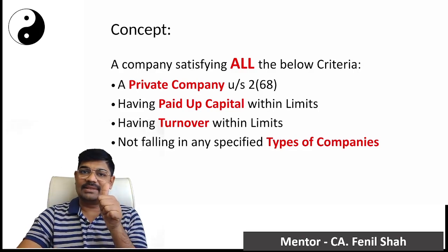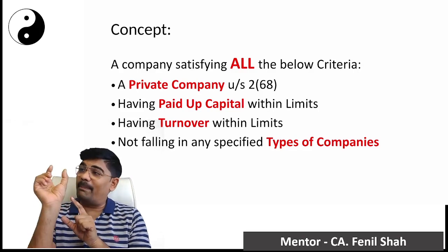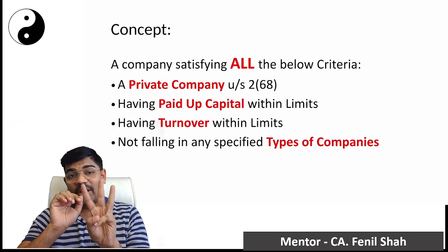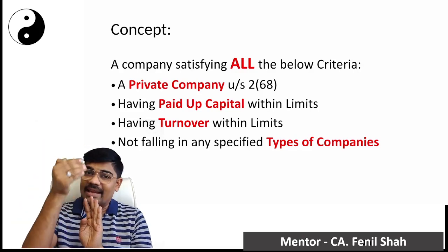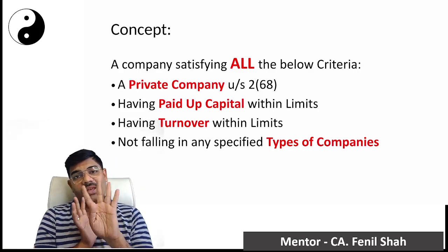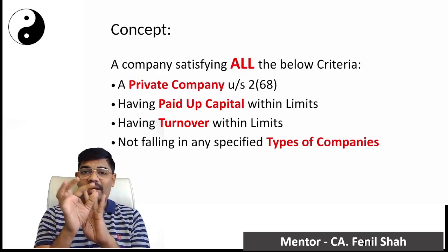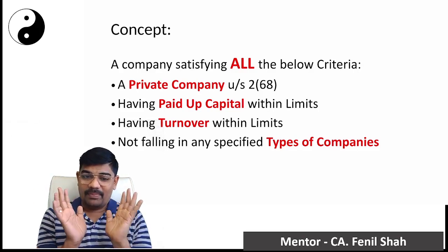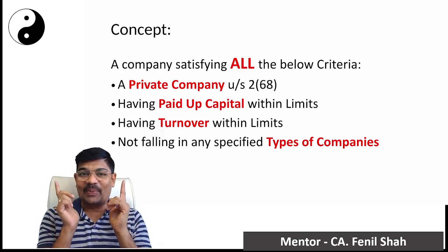There are four criteria to identify a small company. The first thing is that it must be a private company. The second is that its paid-up capital must be within a limit. The third is that its turnover must be within a limit. And the fourth is that it must not fall in the list of exempted companies. So remember four things: private, paid-up capital, turnover, and type of company.